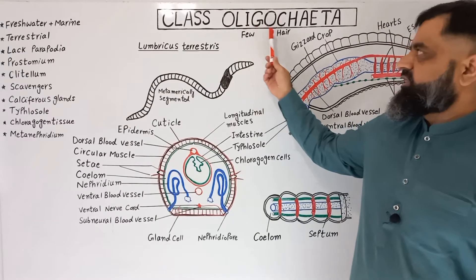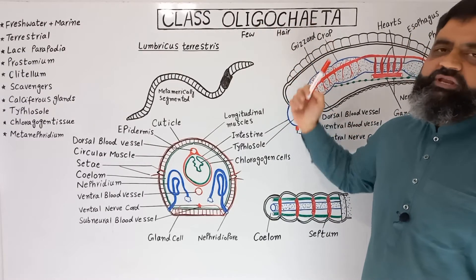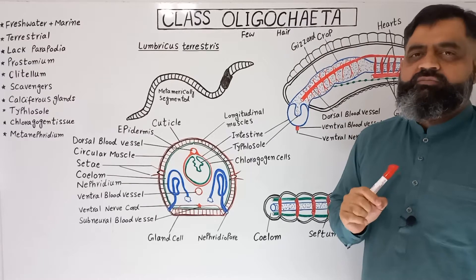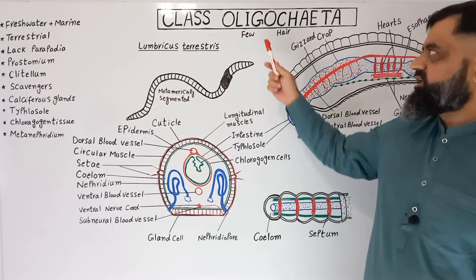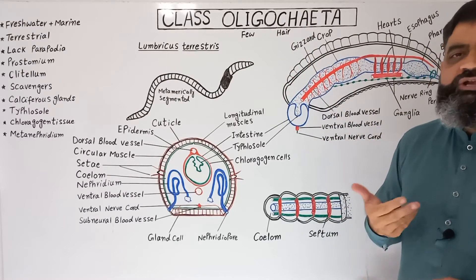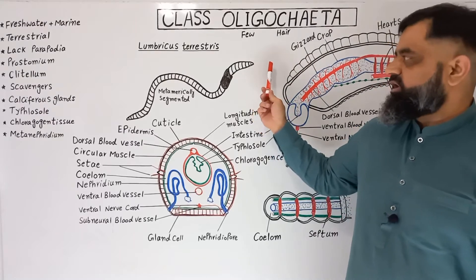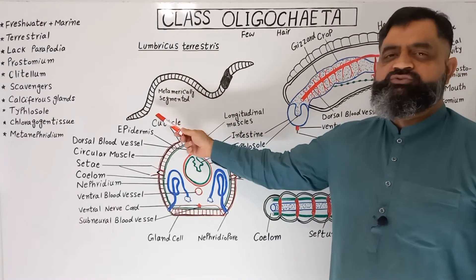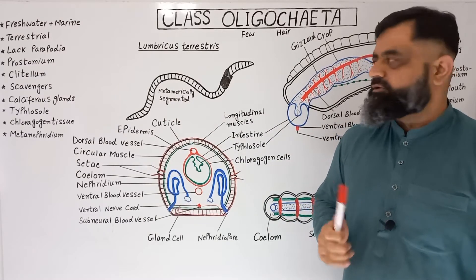If we look at the meaning of Class Oligochaeta: oligo means few, chaeta means hair, because these animals contain small hair-like appendages on their body — that is why these are known as Oligochaeta. This class of Phylum Annelida contains worm-like animals known as earthworms, which can be seen here and there in the rainy season.